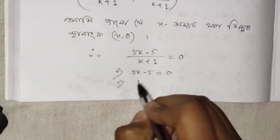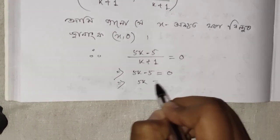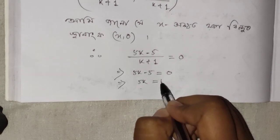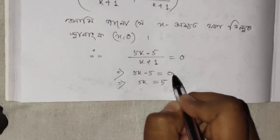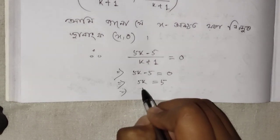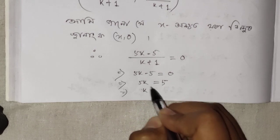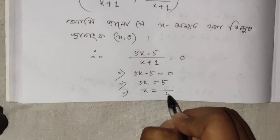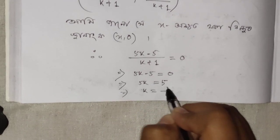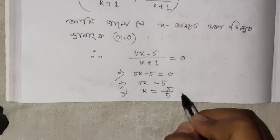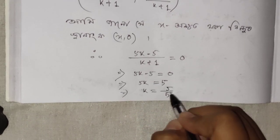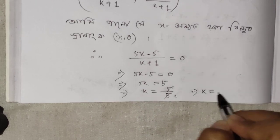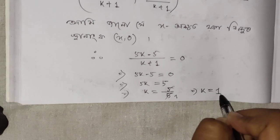Solving 5k - 5 = 0, we get 5k = 5, therefore k = 1.